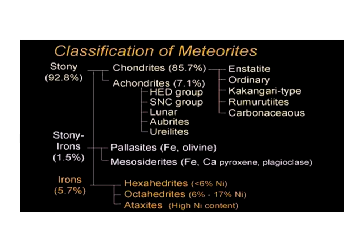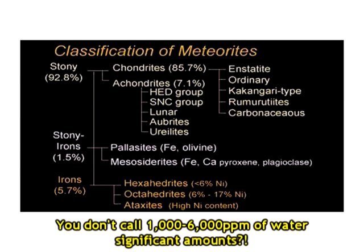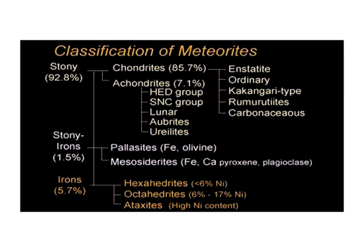While these silicate materials are found in moon rocks, many chondrites found on Earth also contain significant amounts of water and hydrous minerals due to their exposure to Earth's environment — minerals not found in any moon rocks.